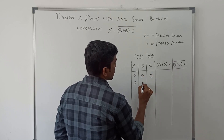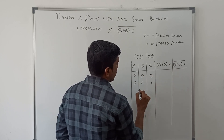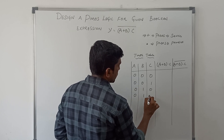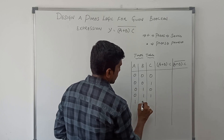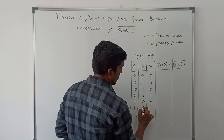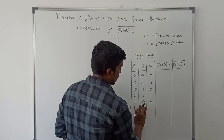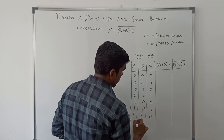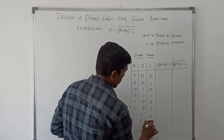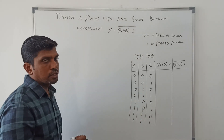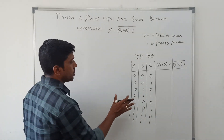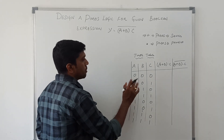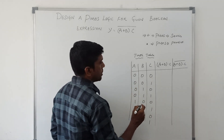These three variables create eight combinations of input — totally eight combinations. These input values are applied in the equation so we can find the result.